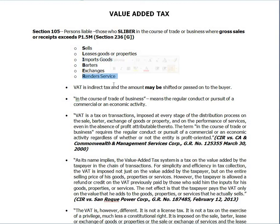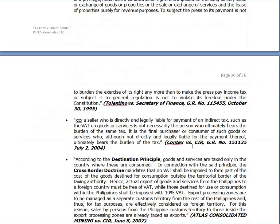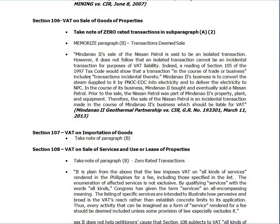VAT is an indirect tax — the amount may be shifted or passed on to the buyer. 'In the course of trade or business' means the regular conduct or pursuit of a commercial or economic activity. There's a case — I think the Mindanao Geothermal case — where they sold a property, a Nissan Patrol. We'll go to it later because the transaction was incidental.